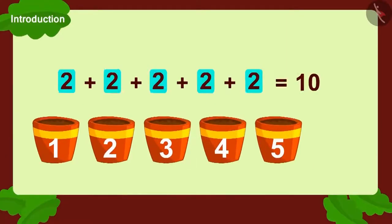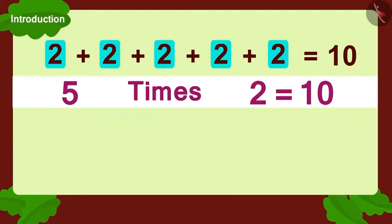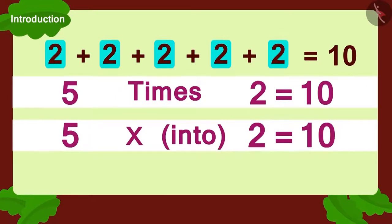Each pot has two seeds. And there are five such pots. We can write it as five times two. Or we can also write it as five multiplied with two.